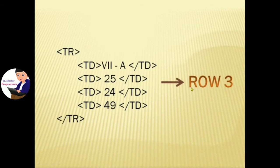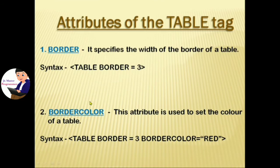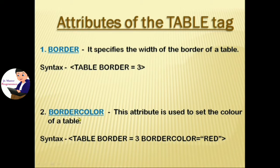Now, attributes of the table tag. First: border — it specifies the width of the border of a table. If we don't specify the border attribute with the table tag, the border will not appear. The syntax is: table border equal to 3.